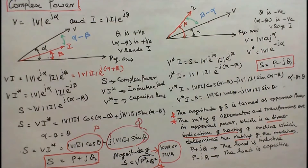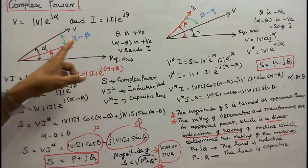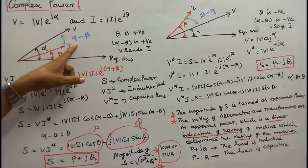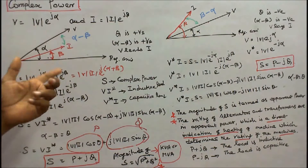Here, Q is positive when alpha minus beta is positive, that means voltage leads current.